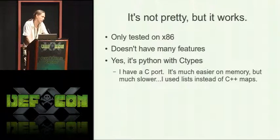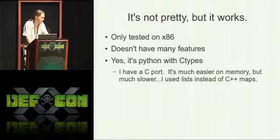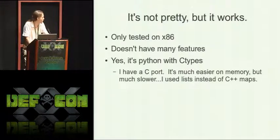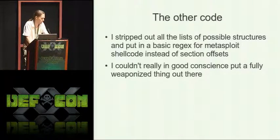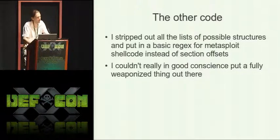You'll want to nicely shim up processor usage if you plan on leaving it running in the background, because it doesn't have any processor control at all. It's not pretty but it works. I only tested it on x86 — there are issues that can happen with x64 because the way you query memory changes and some results can change. It doesn't have a lot of features. I did have auto kill and prejudice levels to try and suspend threads, but that became troublesome. I have a C port but it's much slower because I used lists instead of maps. The other code I'm giving away is an encoder for obfuscating C binaries — I had to strip out some things, I couldn't in good conscience put a fully weaponized thing out there, so you have to populate the lists with assembly structures you're choosing.